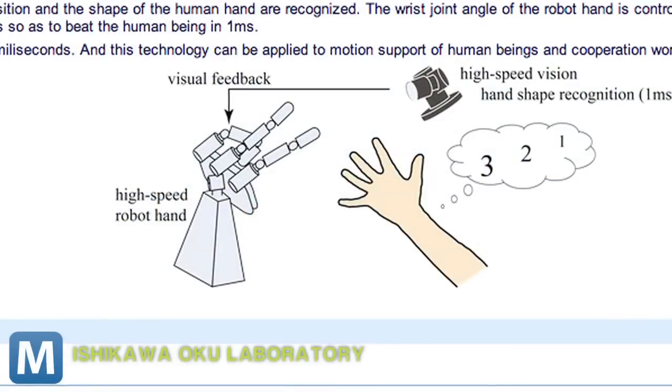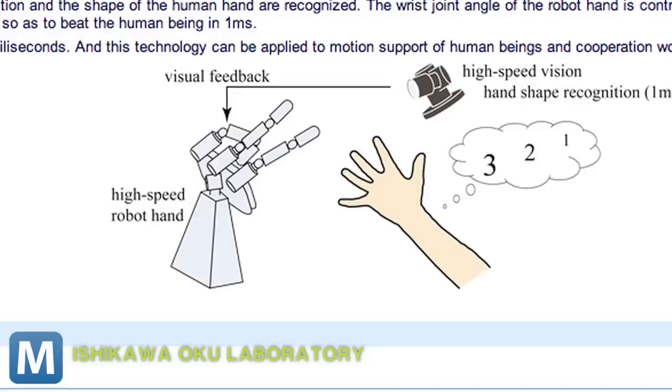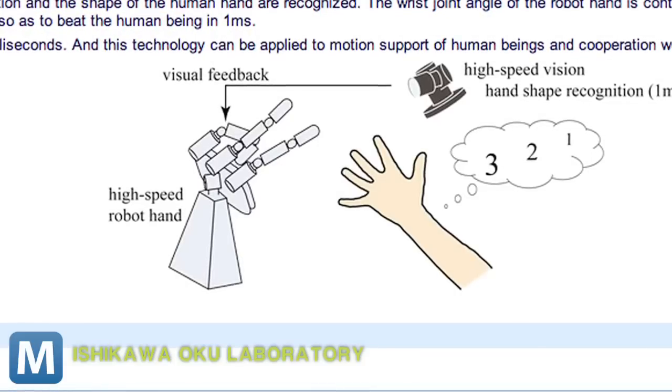It's a robotic hand that has three fingers, just enough to throw rock, paper, or scissors. A motor triggers the hand with millisecond precision.